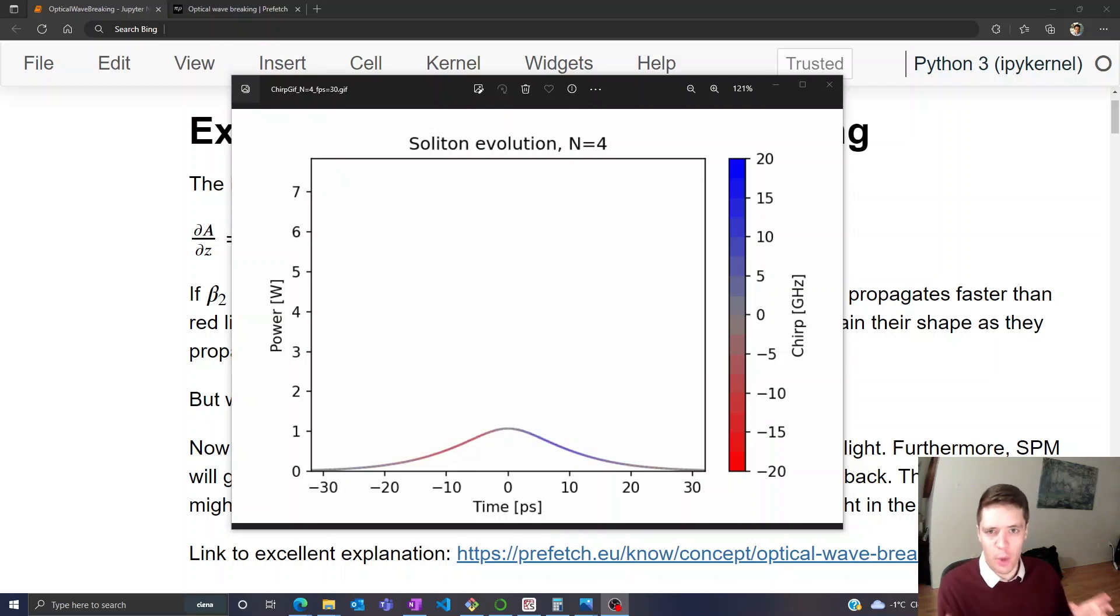Hello and welcome to another video on basic fiber optics. In a previous video we discussed solitons, which are these interesting pulses that can arise when you have a fiber with a strong nonlinearity and also negative dispersion, which we call anomalous dispersion.